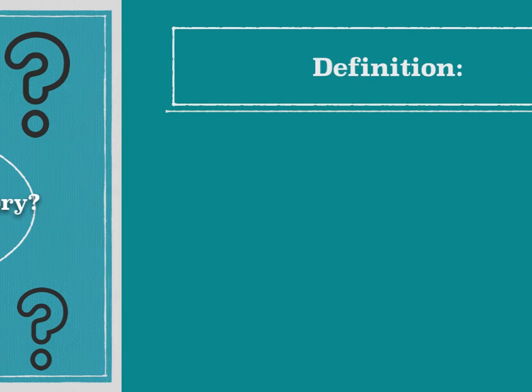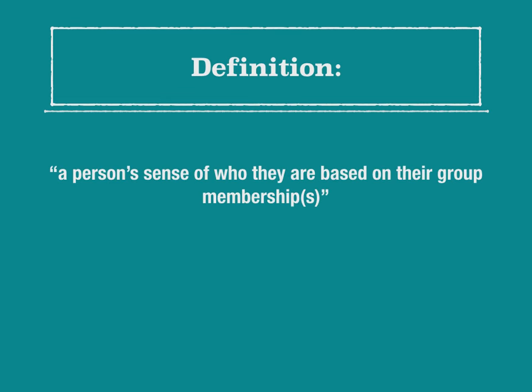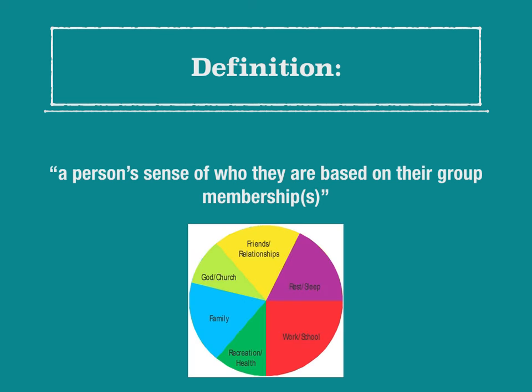First things first, the definition. Social identity theory is a person's sense of who they are based on their group membership or memberships. As individuals, we exist within a variety of groups that make us us.